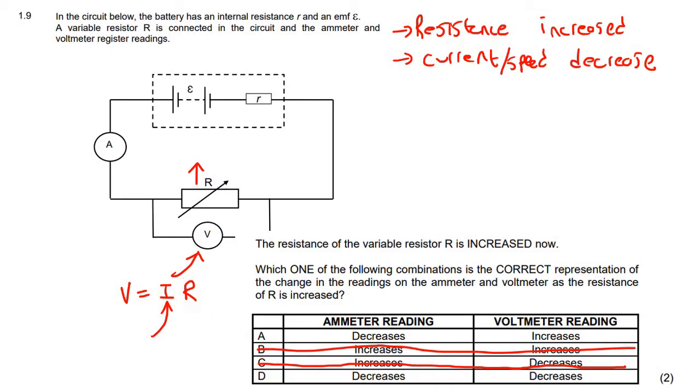But then we also know that this resistance is going to increase. So we have a problem, because this one's going down and this one's going up. So how do we know which one goes up and which one goes down more? And this is why we cannot look here to find the answer.